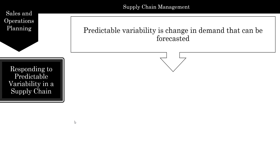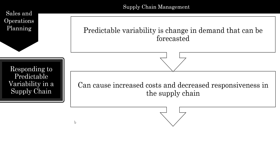Predictable variability is the change in demand that can be forecasted. We can forecast part of it, and then there's the unpredictable part which is the error. This variability can cause increased costs and decreased responsiveness in the supply chain. The more responsive you have to create a supply chain, the less efficient it becomes. So this variability in demand affects responsiveness, and if we decide to be more responsive, it will increase costs.